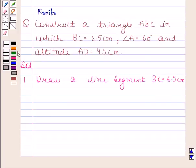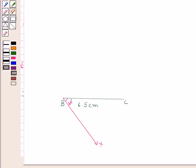In the second step, we will draw angle CBX equal to 60 degrees. This is the angle CBX which is equal to 60 degrees.